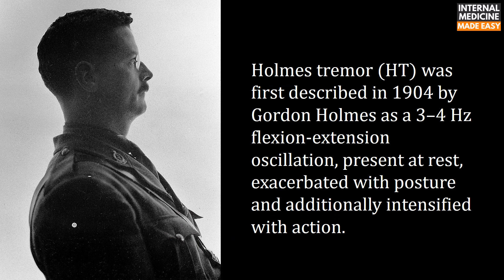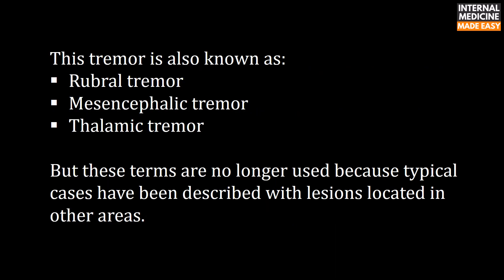Holmes tremor was first described in 1904 by Gordon Holmes as a 3 to 4 Hertz flexion-extension oscillation present at rest, exacerbated with posture, and additionally intensified with action. This tremor is also known as rubral tremor, mesencephalic tremor, or thalamic tremor, but these terms are no longer used because typical cases have been described with lesions located in other areas.